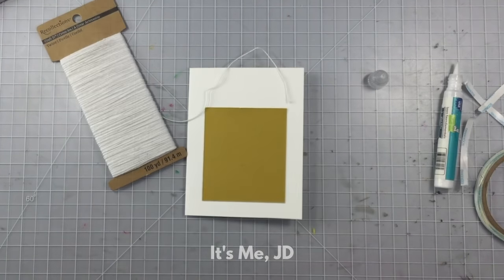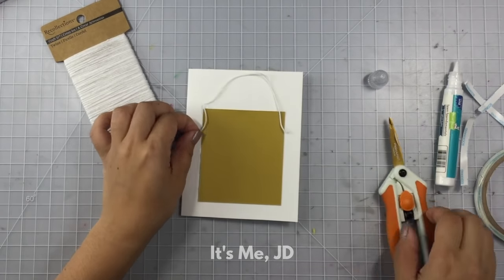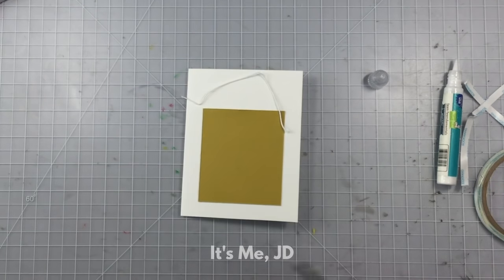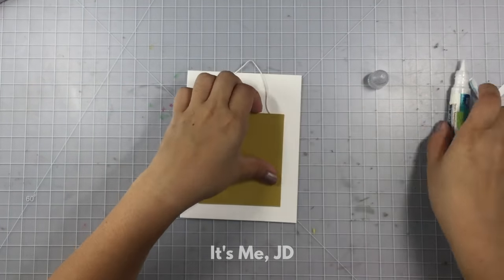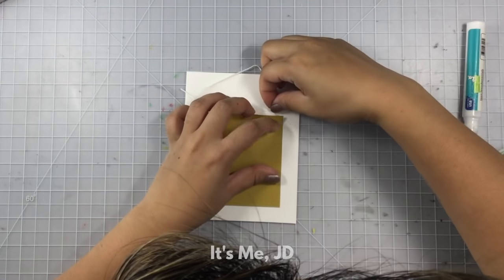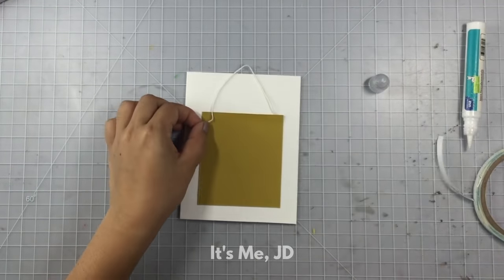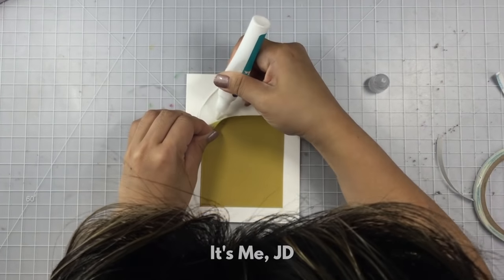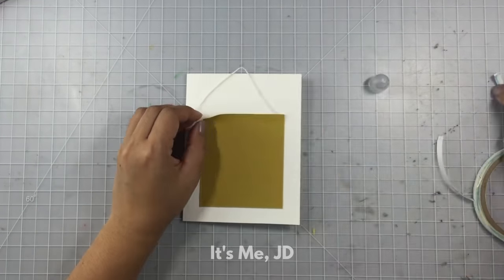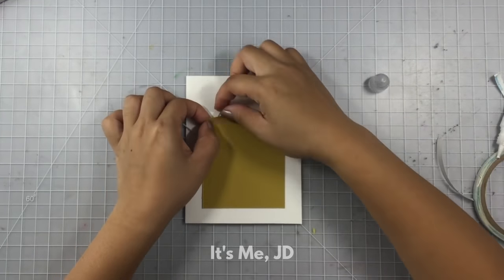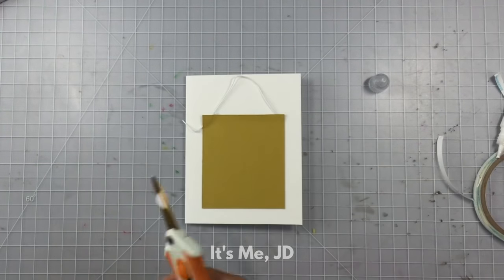And that's when I realized I skipped a step. I should have added my shopping bag handles, aka my string, to the shopping bag first. But no worries. I'm just going to put a dot of glue behind the piece of rectangle cardstock. Just lifting it up a little and trying to wedge that string in there. And it still works either way.